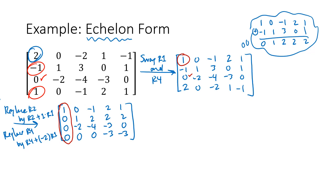Now we're ready to move on to column 2. Our dream for column 2 is that it looks like 0, 1, 0, 0 — a pivot in the second position and zeros below. If we wanted reduced echelon form we'd also need the zero above, but for just echelon form we don't need that. Column 2 is almost the way we want it — the only issue is the −2 in row 3 that needs to be a 0.